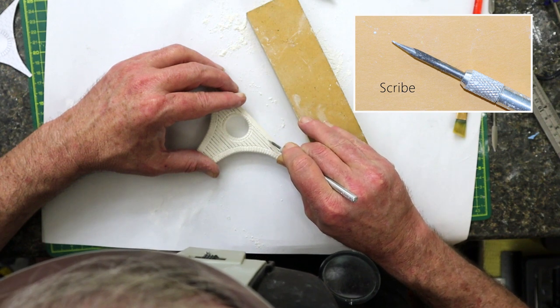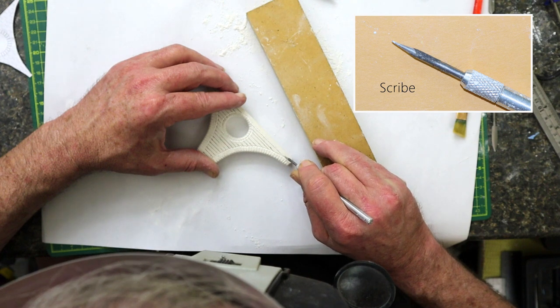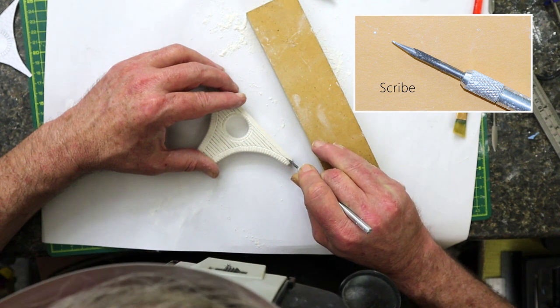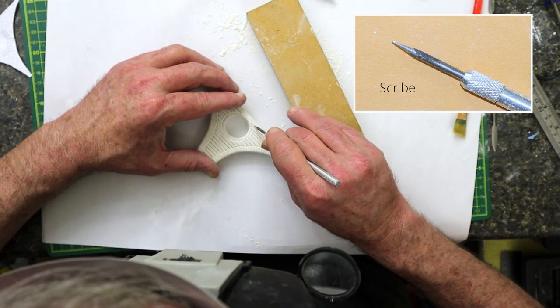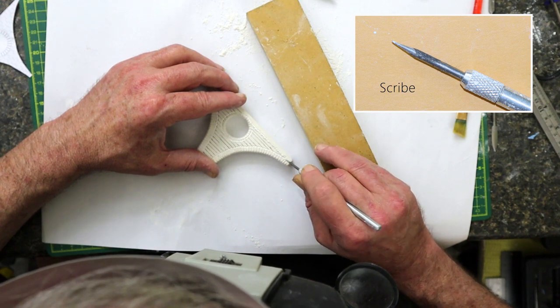As I approach the end of the pass, I ease up a bit to prevent chipping out a large piece. On the second pass, I'll bear down a bit more. Randomly, I will allow a little chip out for variation.